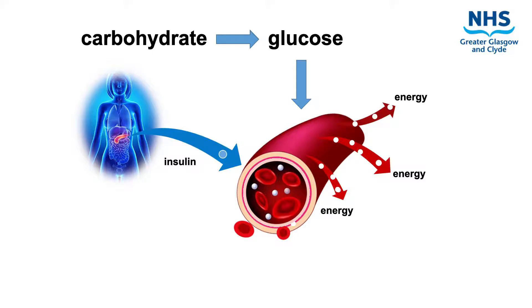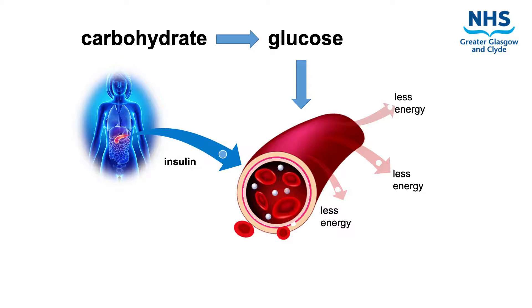However, changes to the levels of other hormones during pregnancy can upset this process. As normal, the pancreas produces insulin when blood glucose levels rise, but it may not work as well, so more insulin may be needed. This is called insulin resistance. Gestational diabetes develops if the body cannot meet this increased demand. Without enough insulin, less glucose is able to move out of the bloodstream and blood glucose levels can stay too high.